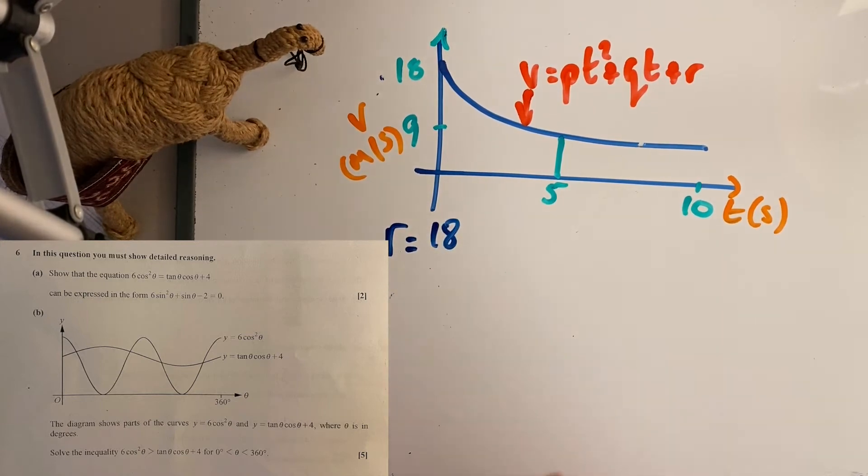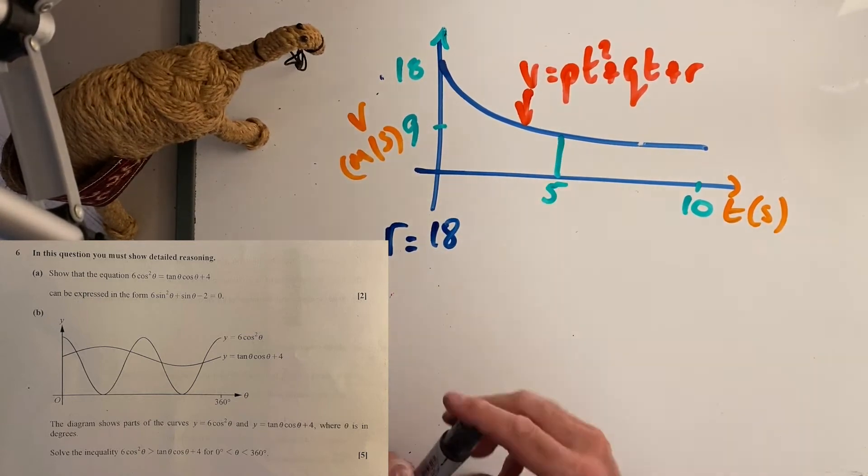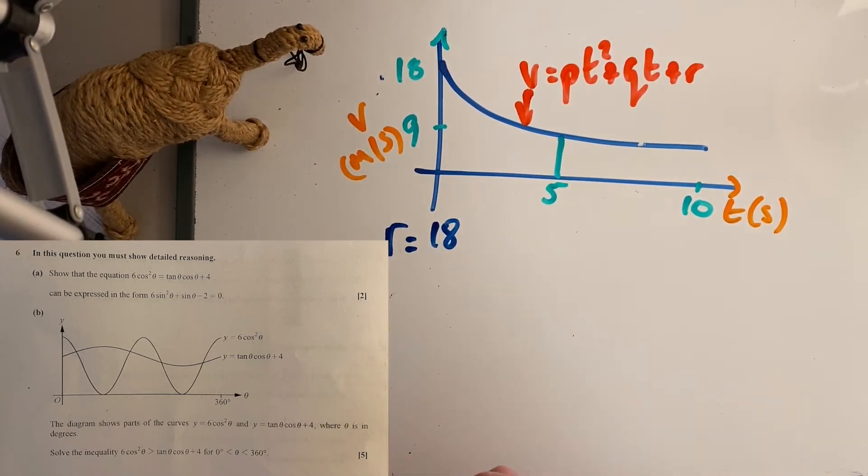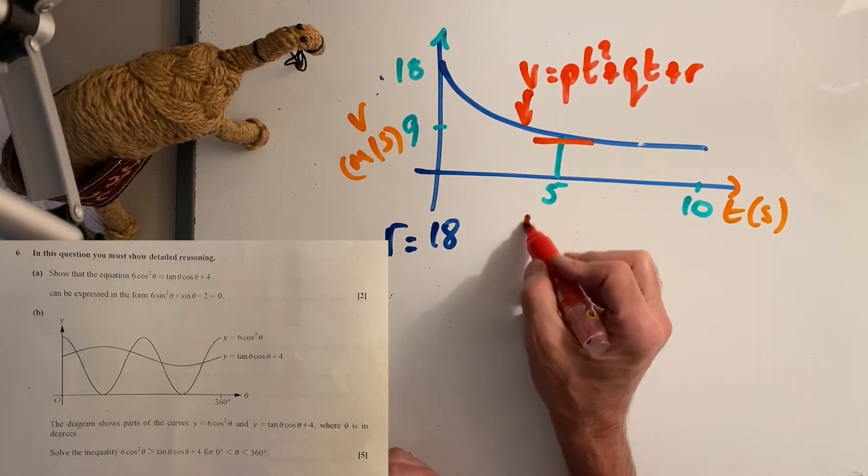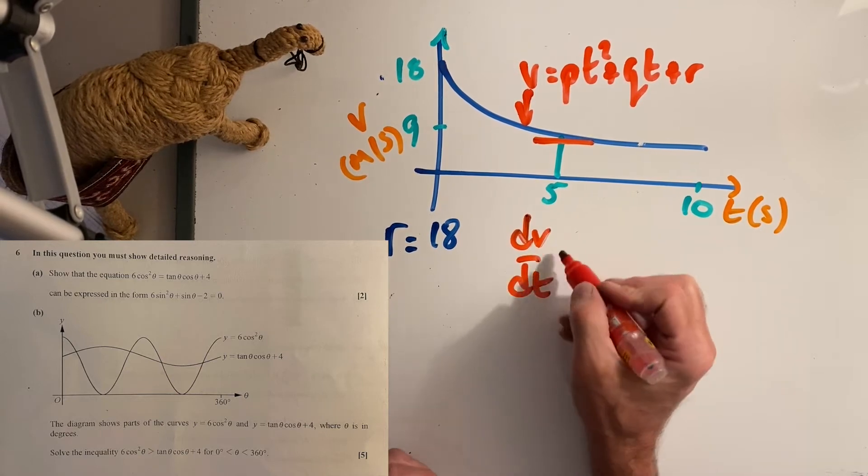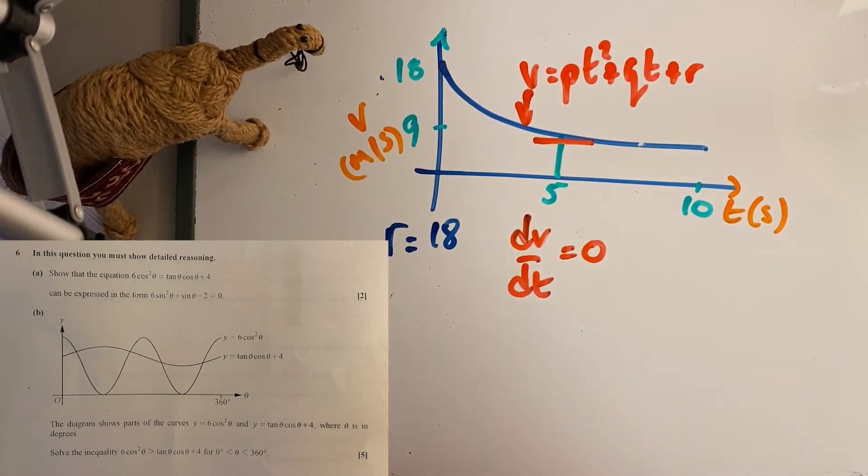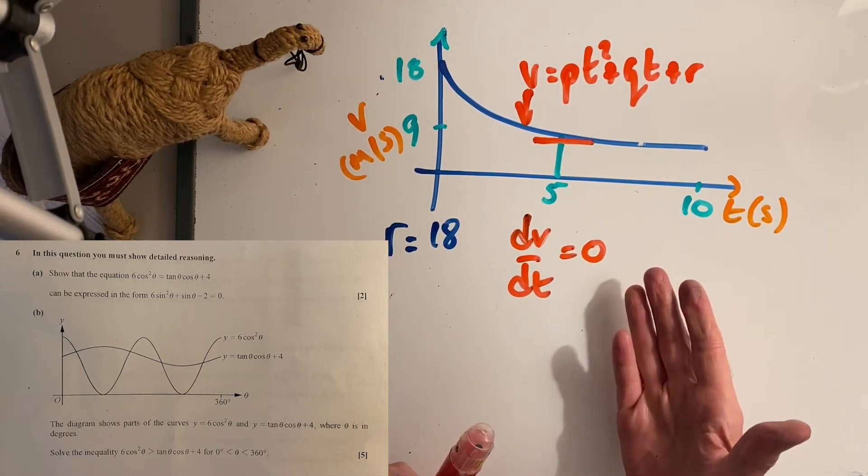I've got that, but I also know that it's constant at this point here, so effectively I've got dv/dt equals zero at that point there. That's how you do that.